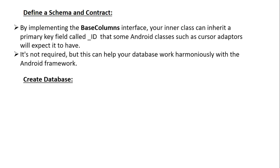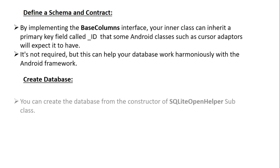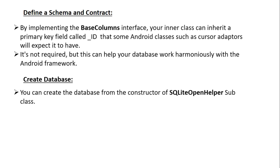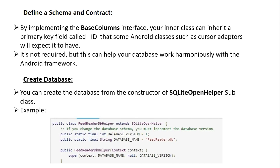Now we can learn about how to create the database. You can create the database from the constructor of the SQLiteOpenHelper subclass. Here we create a class called FeedReaderDbHelper that is a subclass of SQLiteOpenHelper. We provide two constant variables: DATABASE_VERSION and DATABASE_NAME. There is no default constructor for SQLiteOpenHelper — we need a constructor with at least a context parameter, and we pass the context, database name, and database version to the superclass.